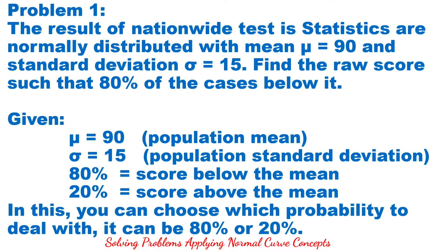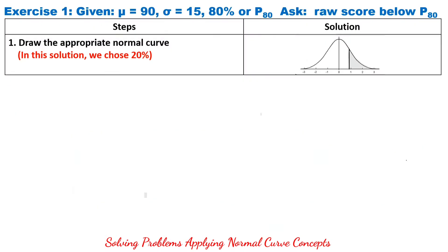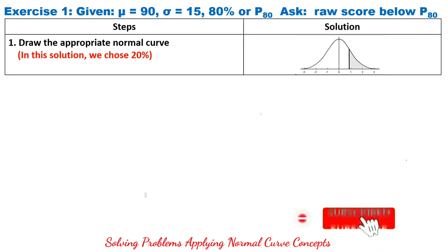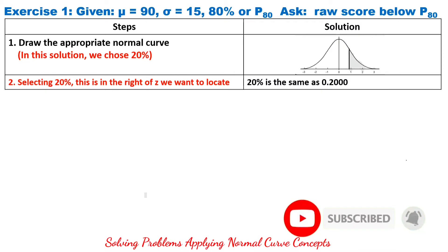We can choose which probability to deal with — it can be 80% or 20%. In our solution, the first step is to draw the appropriate normal curve. In this solution, we choose 20%. Selecting 20%, this is to the right of the Z value we want to locate.